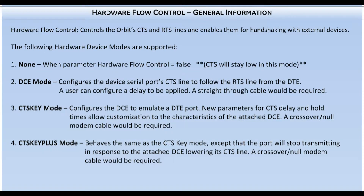When hardware flow control is disabled, there is no serial flow control done on the port. When enabled, the Orbit MCR supports three modes to control the serial port lines: DCE, CTS key, and CTS key plus. Each of these modes configures the Orbit's RTS and CTS lines to operate in a slightly different way.